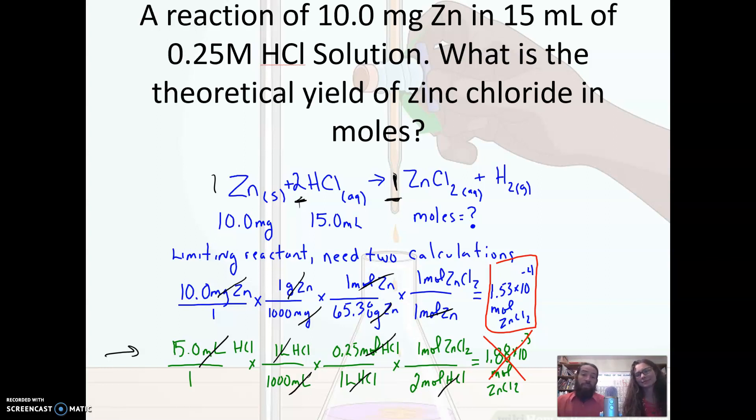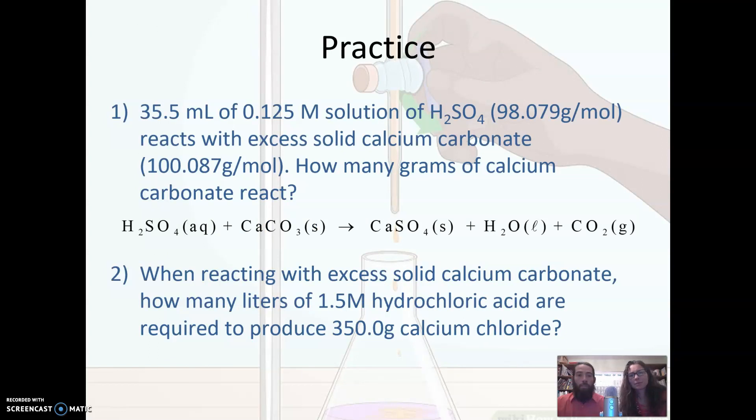We're left with moles of zinc chloride, and this answer was greater than with the 10 milligrams of zinc. So that can't happen. There's not enough zinc there to make that much zinc chloride. So what is the theoretical yield? 1.53 times 10 to the negative 4 moles.